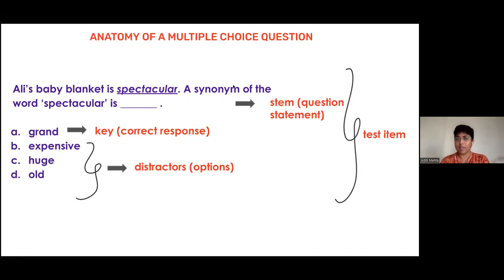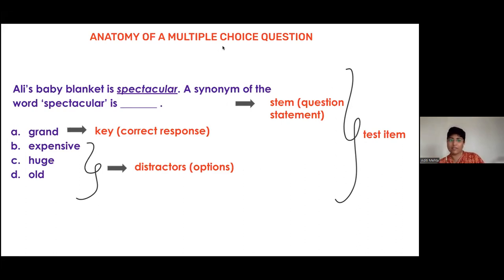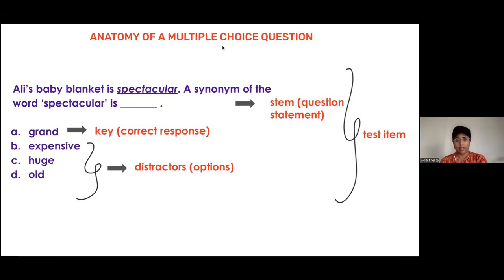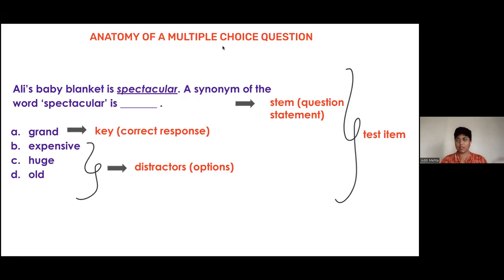There is a healthy debate about the right number of options to have — should we have three distractors, four, or five? The general consensus is that for children in grade seven and above, four options total — one key and three distractors — is a good and healthy number. All international assessments also use four options. From a creation point of view, creating more distractors that meet all the rule criteria is actually a very difficult job.